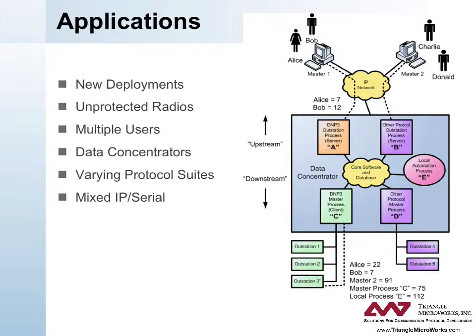Multiple users: in networks like the data concentrator system pictured here, DNP3 Secure Authentication permits a separate identifier to be assigned to each user at the master — for example, Alice or Bob — so that the operations performed by that user are tracked throughout the system. Data concentrators: the specification has rules defined to ensure end-to-end security even through a data concentrator such as the configuration pictured here. Varying protocol suites: DNP3 Secure Authentication operates at the uppermost protocol layer and is therefore carried across networks that use different lower-layer protocols. Mixed IP and serial: DNP3 Secure Authentication works well with terminal servers and IP-based radios.